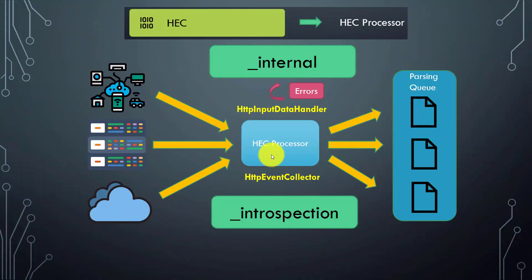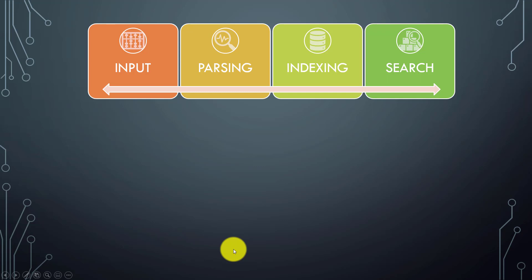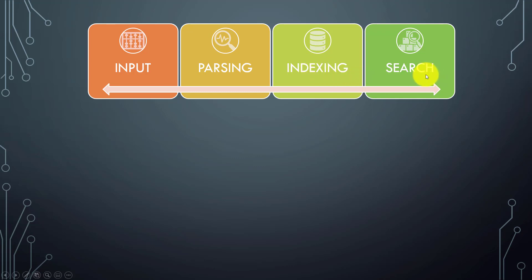In my previous video, we talked about the HTTP Event Collector related logs and how to see them in Splunk. Now in this video, we will slowly move from the input phase — we've been discussing lots of processors related to the input phase — and move to the parsing phase. Then we will see how different processors are engaged in the indexing phase, and then search and other Splunk dialogs.